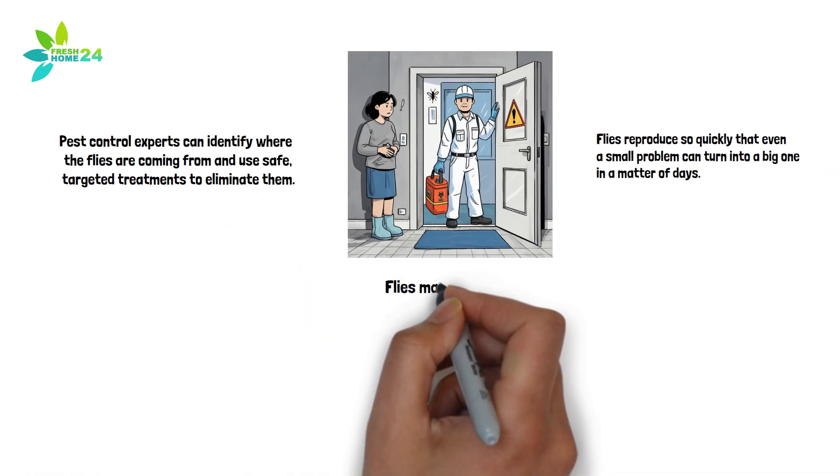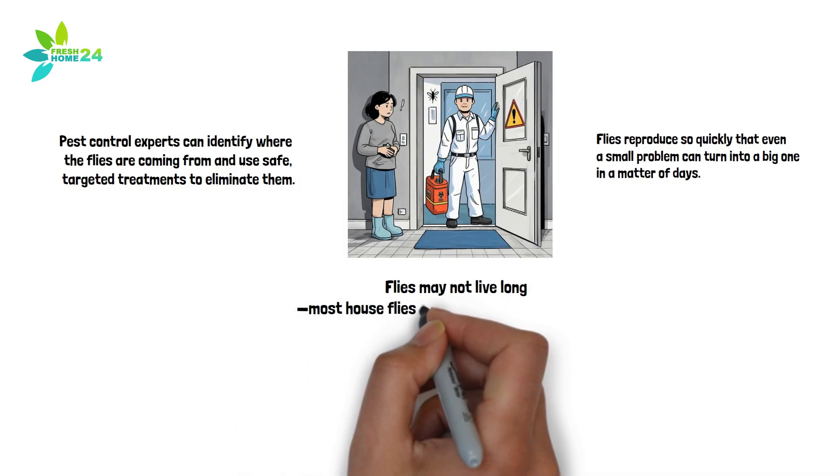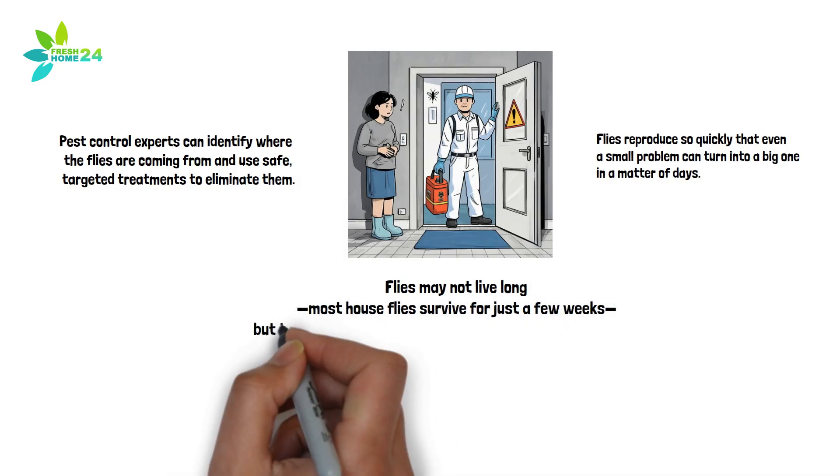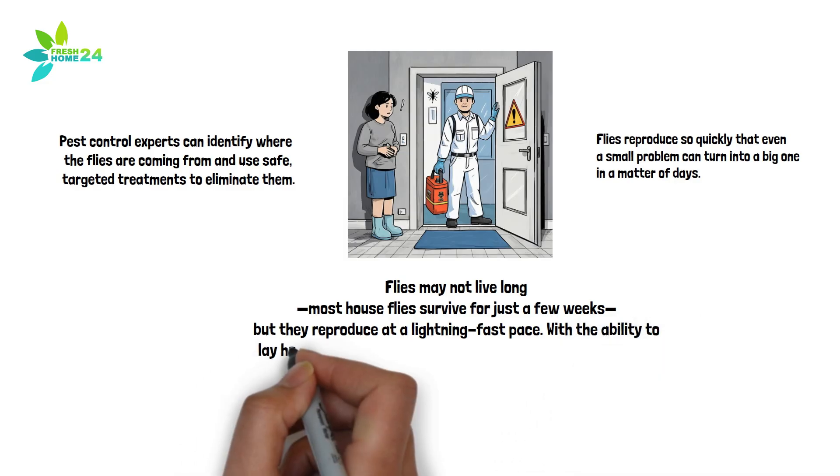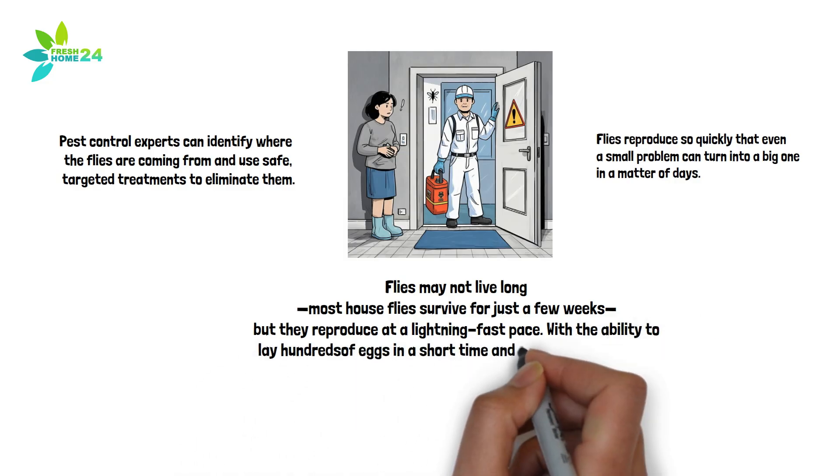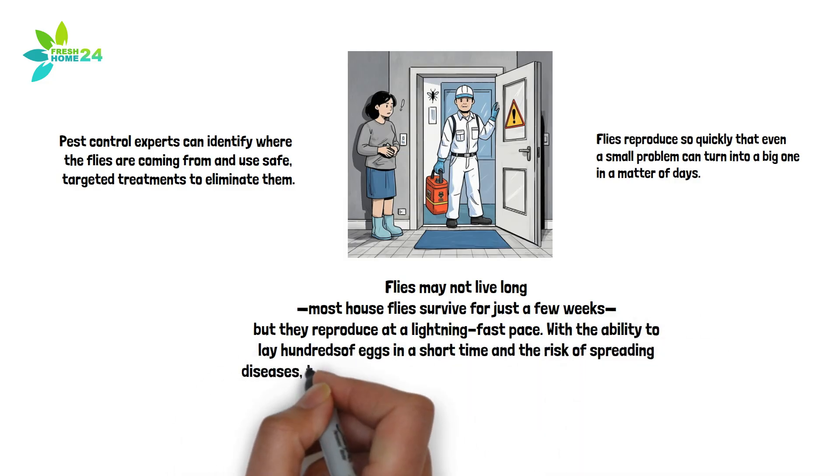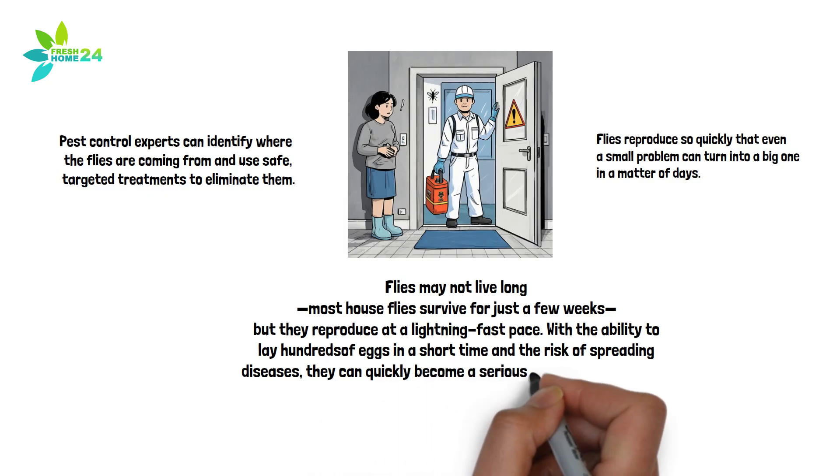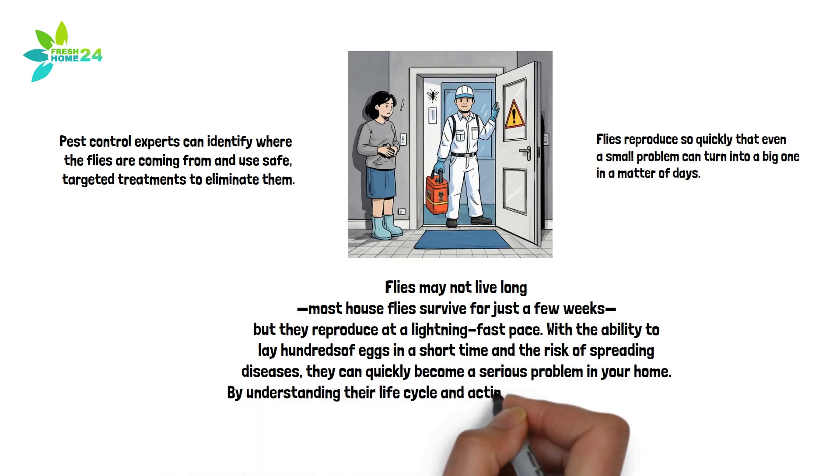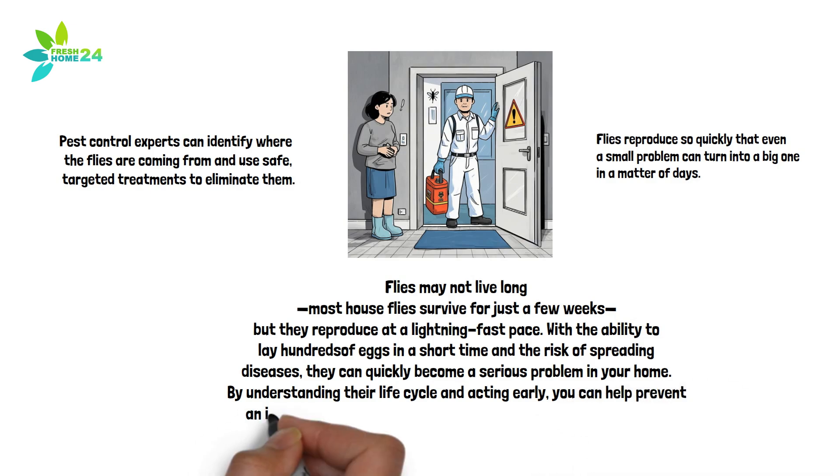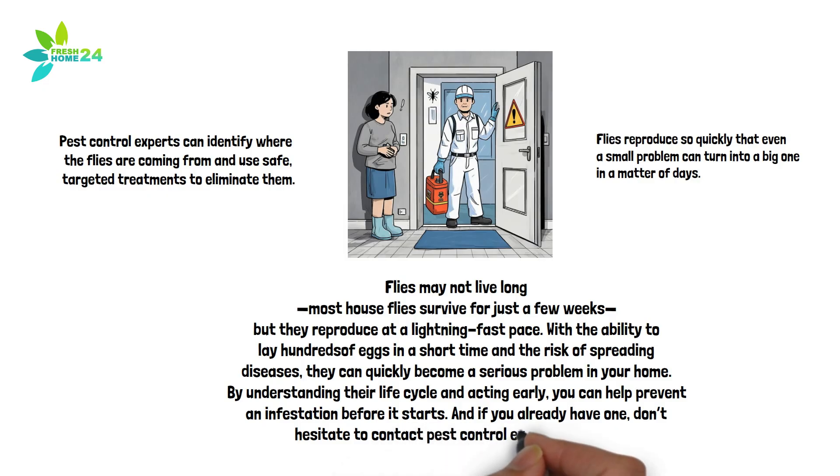In summary, flies may not live long. Most house flies survive for just a few weeks, but they reproduce at a lightning-fast pace. With the ability to lay hundreds of eggs in a short time and the risk of spreading diseases, they can quickly become a serious problem in your home. By understanding their life cycle and acting early, you can help prevent an infestation before it starts. And if you already have one, don't hesitate to contact pest control experts for help.